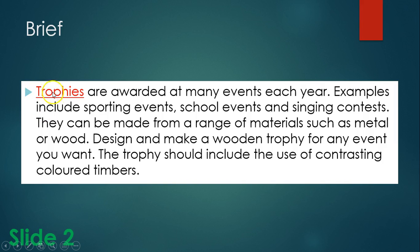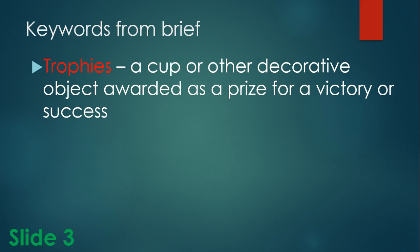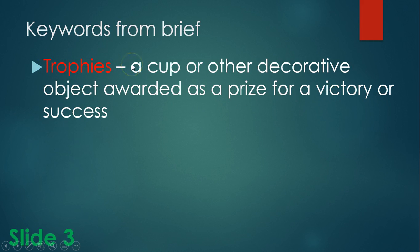You'll also notice that I have highlighted one word, and this is going to form the basis of the next slide, which is the keywords. I want you to highlight as many words as possible — approximately six. You can underline them or colour them in. Any word you've highlighted, I want you to write it out and give an explanation for it. For example, my keyword is 'trophies' and the explanation is: a cup or other decorative object awarded as a prize for a victory or success.